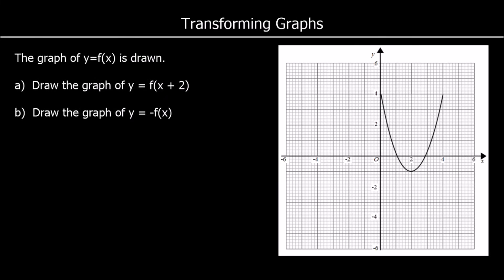Here we have a graph drawn on a grid and we're asked to draw the graph of y equals f of x plus 2. The change is inside the bracket, so we do the opposite — it says plus 2, so we take 2 away from all x coordinates. The graph shifts 2 spaces to the left. We shift every point 2 spaces to the left and join them up.